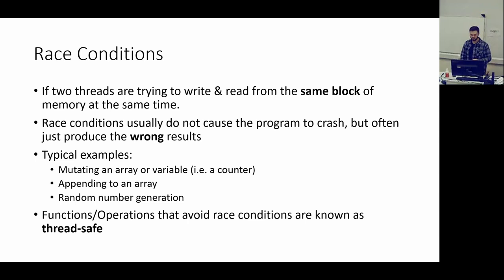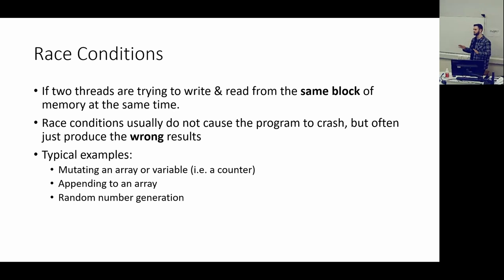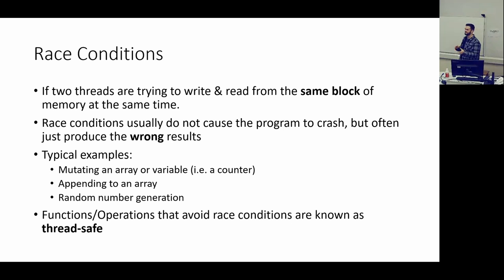Random number generation also usually causes race conditions which you have to be quite careful of. Luckily in Julia behind the scenes it's all thread safe. So thread safe basically just means it doesn't have a race condition somewhere and you're safe to use this function from multiple threads at the same time. The random number generator has a state for each of your threads that ensures you won't have a race condition there.